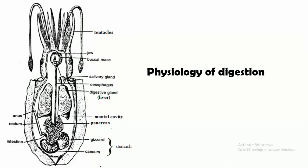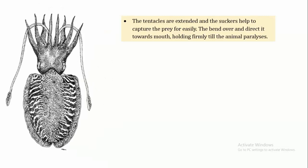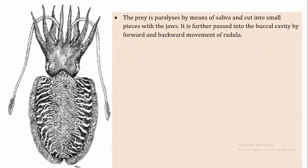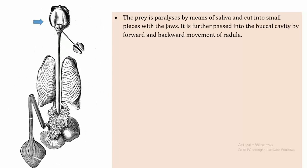Sepia is a carnivore animal feeding on crustaceans, other mollusks and fishes. The tentacles are extended and the suckers help to capture the prey, bending over and directing it towards the mouth, holding the animal firmly until it paralyzes completely.